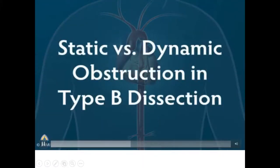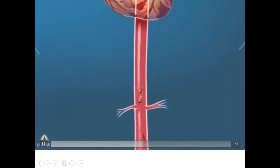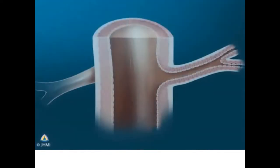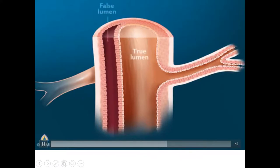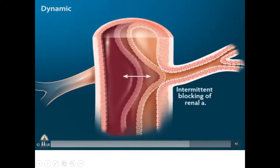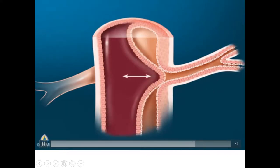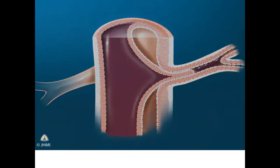An important concept is differentiating static versus dynamic obstruction in Type B dissection. The intramural hematoma expands and pushes the inner flap — this is the true lumen and this is the false lumen. With every heartbeat, the false lumen pushes the inner flap. If any side branch or visceral branch such as the renal artery is present, the flap will prolapse into it — like a finger — to obstruct it, so distal blood flow is compromised. This is the dynamic obstruction mechanism.